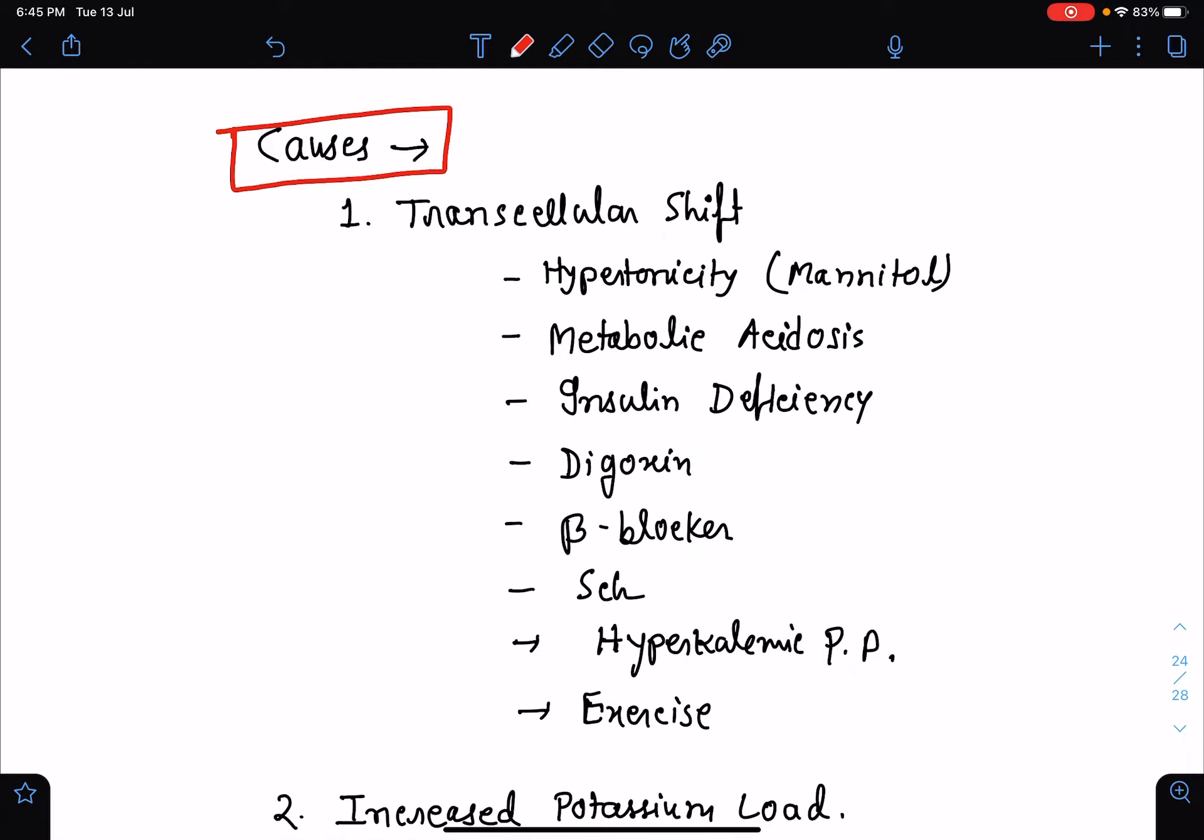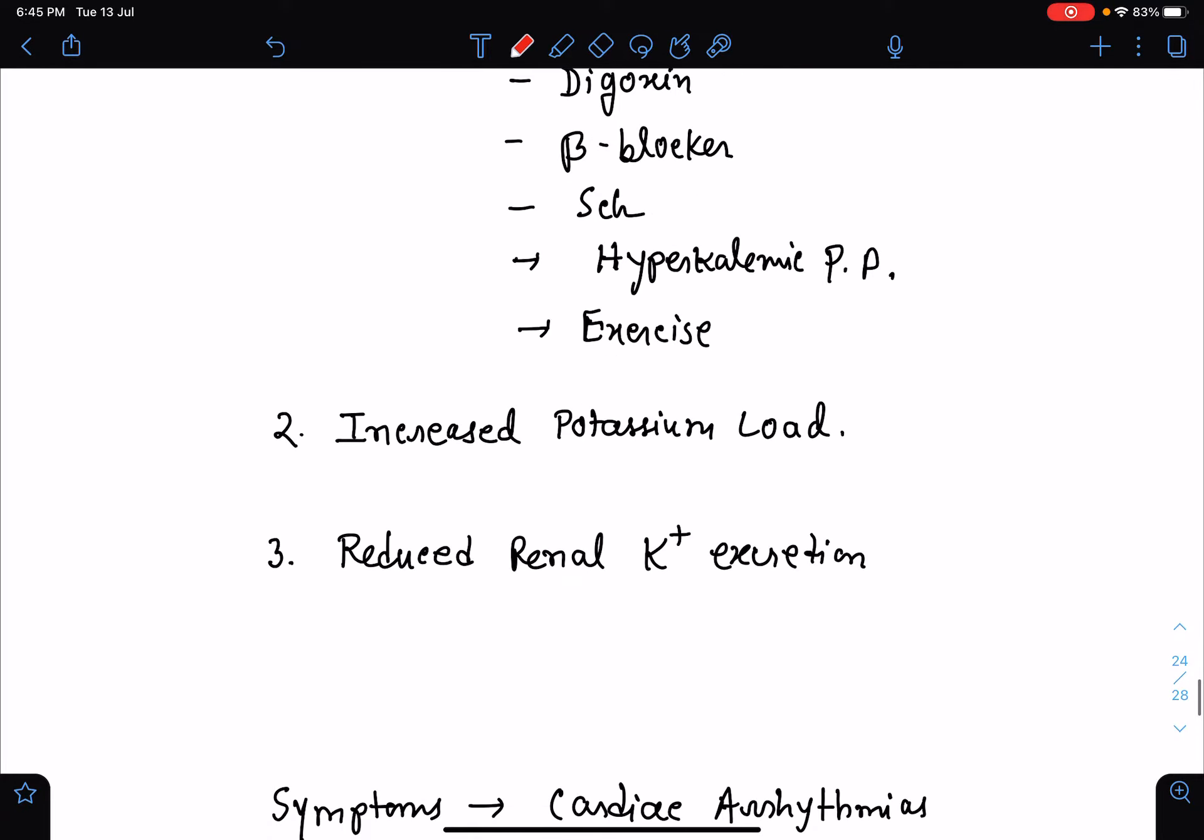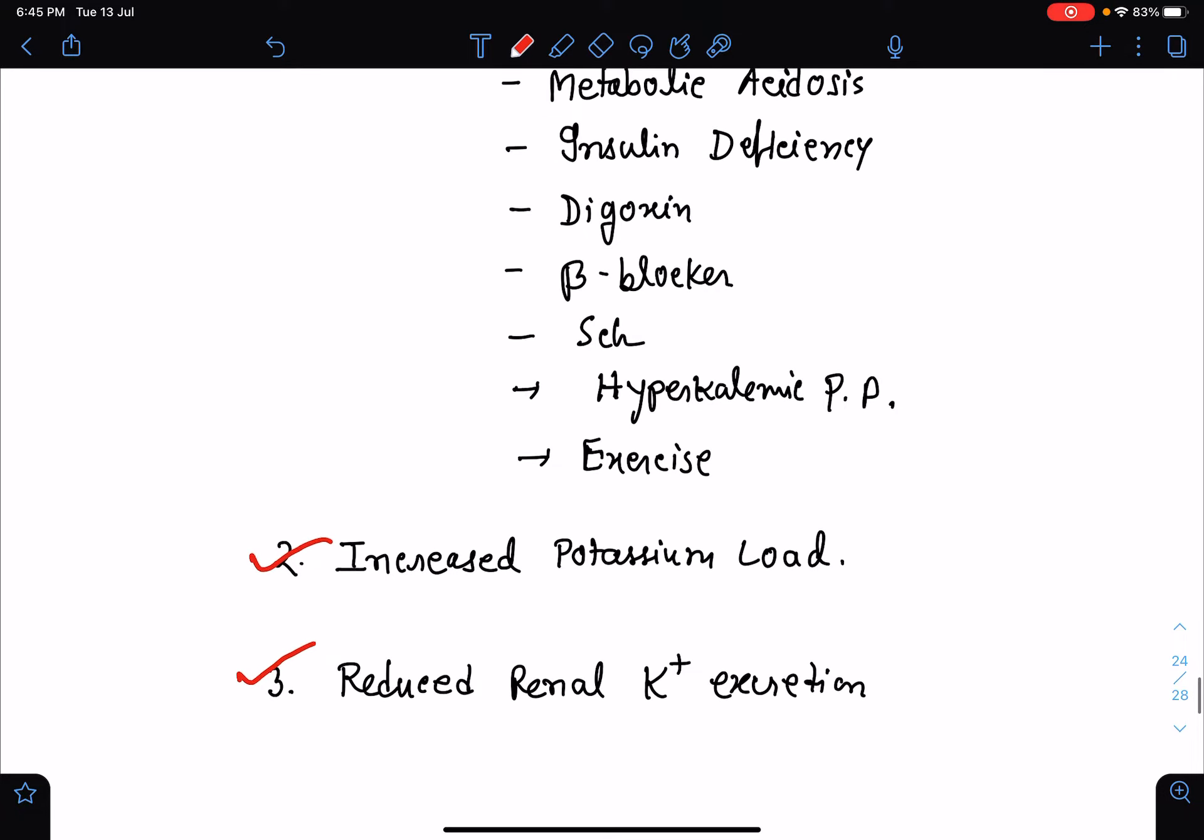Now let's see what are the causes of hyperkalemia. The causes may be divided into three groups: transcellular shift of potassium, increased potassium load, and very importantly, reduced renal excretion of potassium.